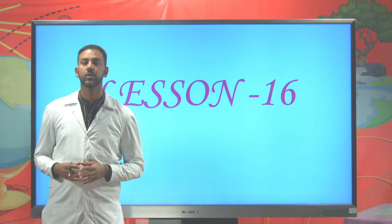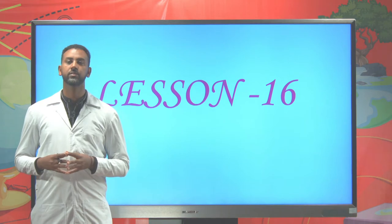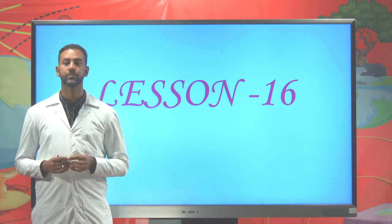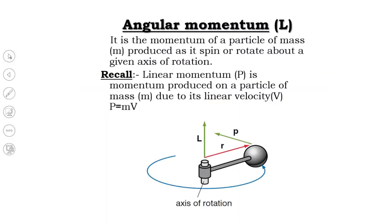So that was what we discussed previously. Today, let's discuss the last concept of this unit, and it is angular momentum. Momentum is a property of massive bodies which exerts a force along its motion. It's a property of massive bodies, and now this concept applies for objects having rotational motion.